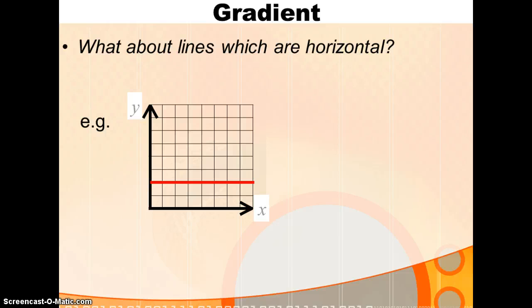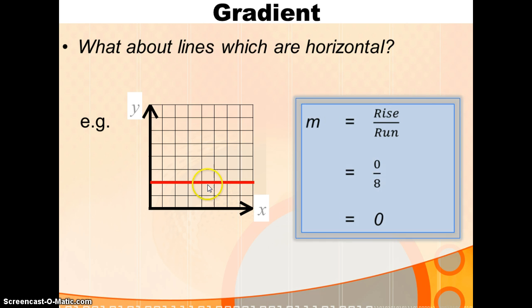Well, let's take our formula. Rise over run. What have you risen by? You haven't risen at all. So, your rise is 0. Your run is 8 in this part of the graph that we're looking at. 0 divided by 8 is 0. 0 divided by anything is 0. So, all horizontal lines have a gradient of 0.